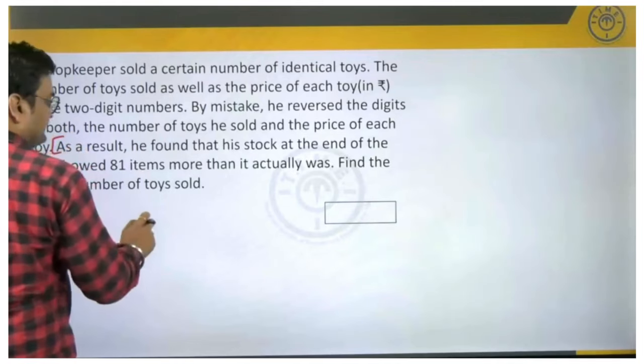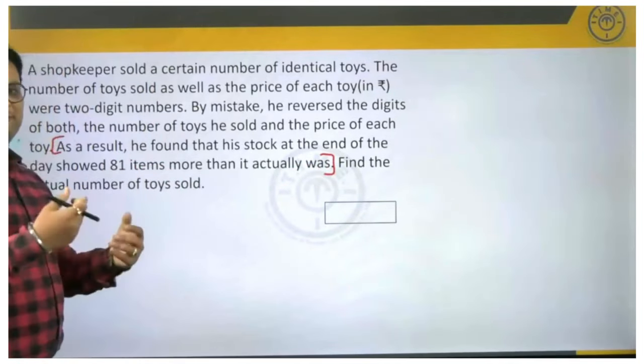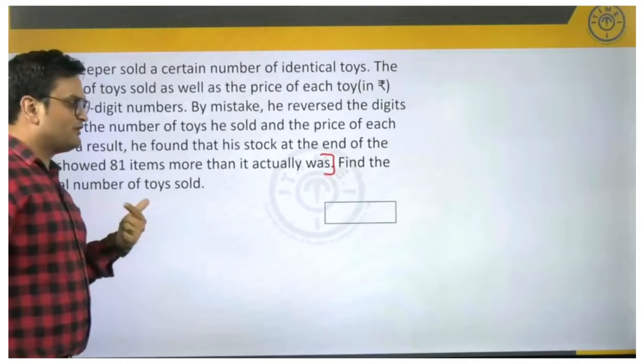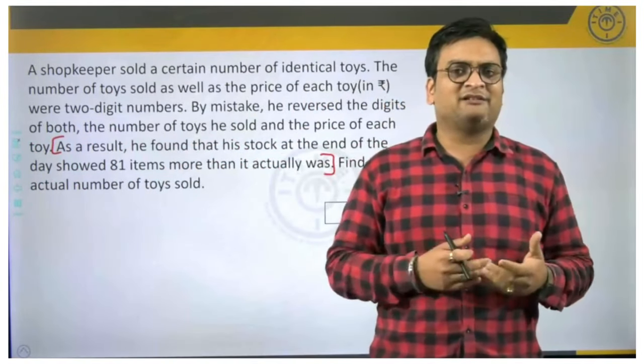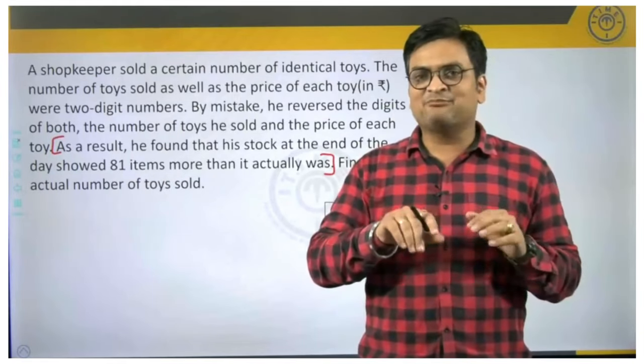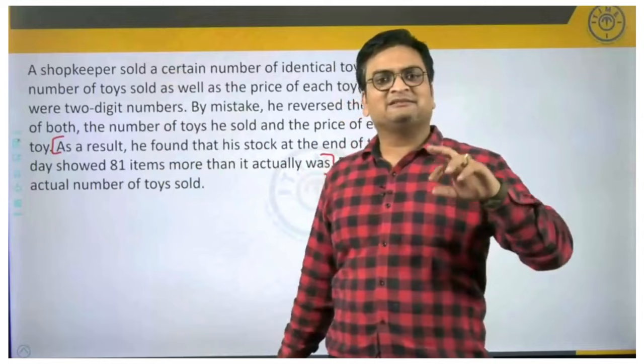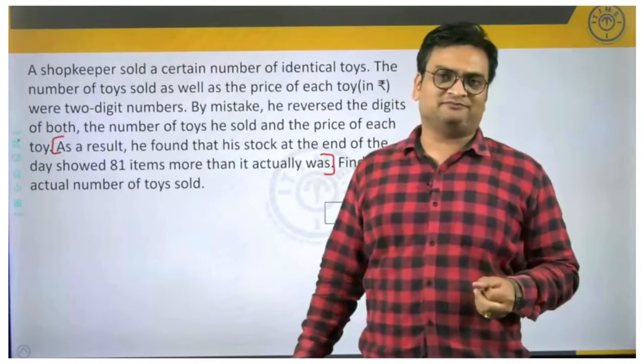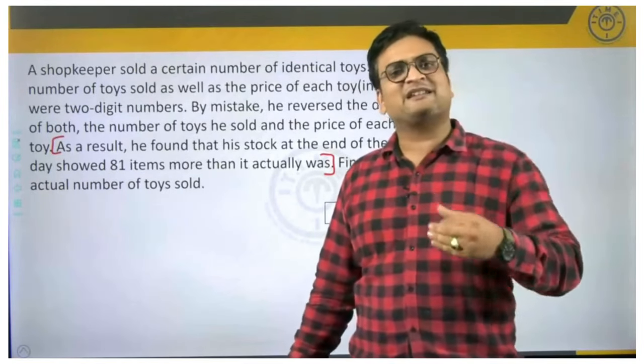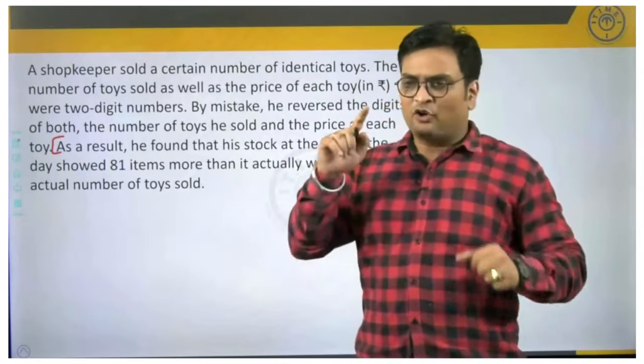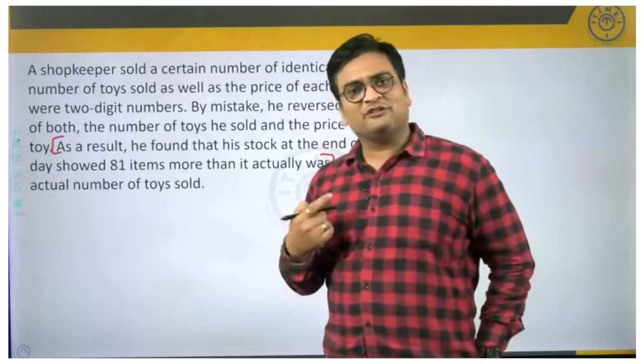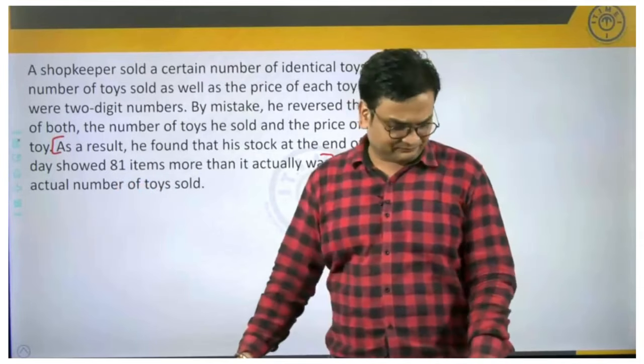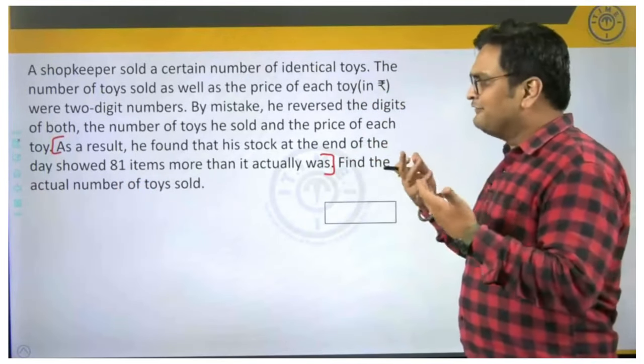As a result, he found that his stock at the end of the day showed 81 items more than it actually was. Why is it showing 81 items more? Why is there a mistake? Because his inputs were wrong. Because somewhere in the question he said the sales were reported as reverse digits. For example, if the sales was 27, he wrote it as 72 or vice versa. If the sales was 72, he wrote it as 27. He made a mistake there. On account of that mistake, this error is also creeping. The system is showing 81 items more whereas there are no extra items.